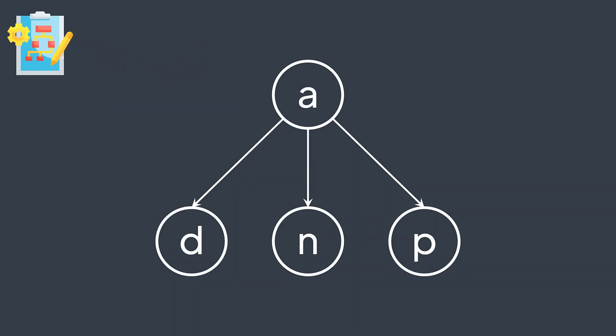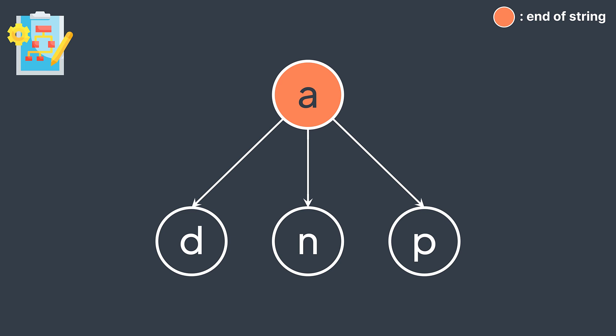In a trie node, we want to store three pieces of information: the character, the references to children, and a boolean that says if there is a word that ends at the actual node. This is necessary because words don't necessarily end at leaves.